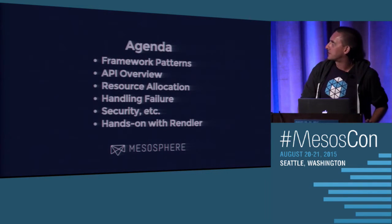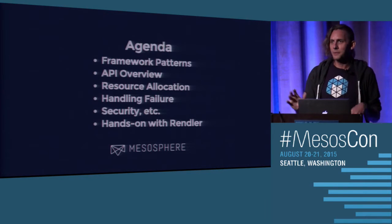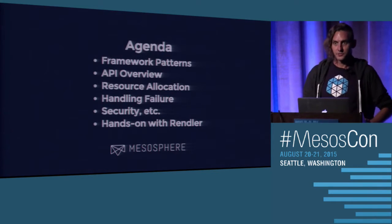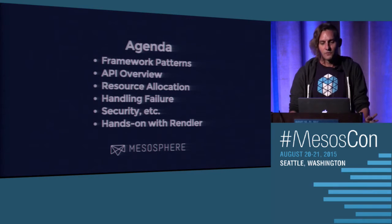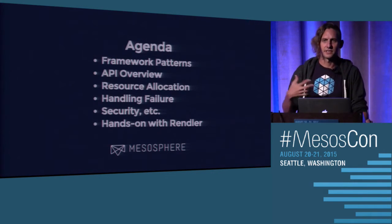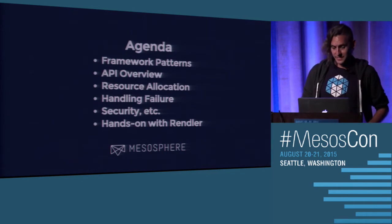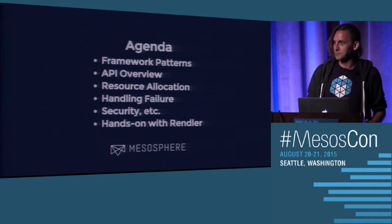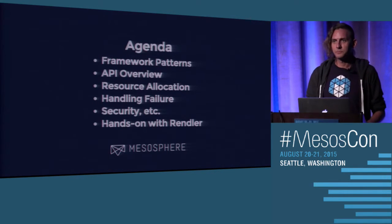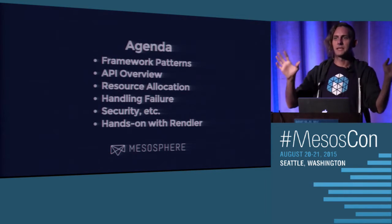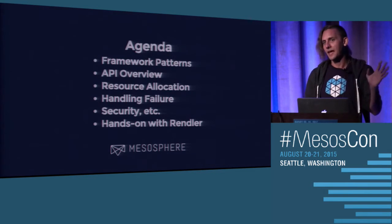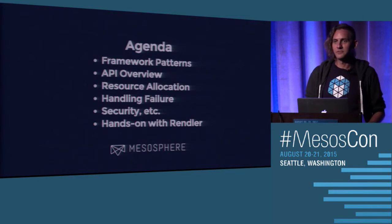Here's what we're going to talk about. I'm going to start with some framework patterns — common patterns that can be useful for different types of Mesos frameworks and distributed systems. We'll dive into an overview of the API and touch on resource allocation, failure handling, security, etc. And then what you're all here for: writing some code, making your frameworks more production-ready using Rendler, an example framework available in many different languages.